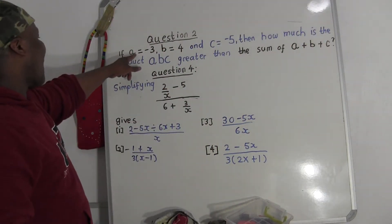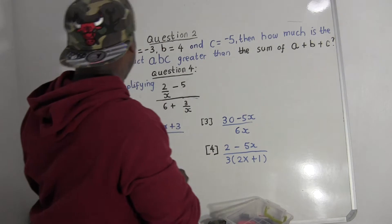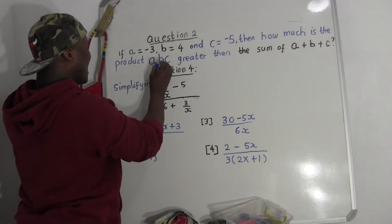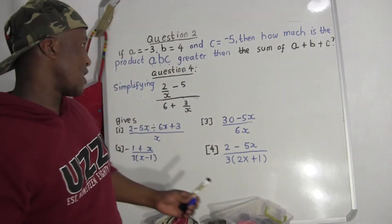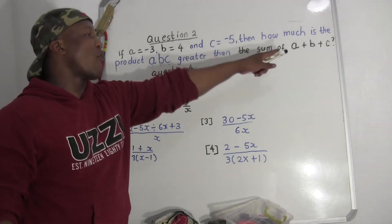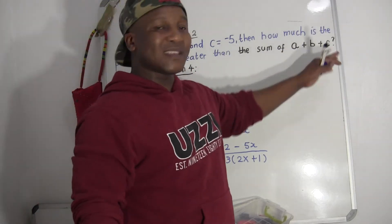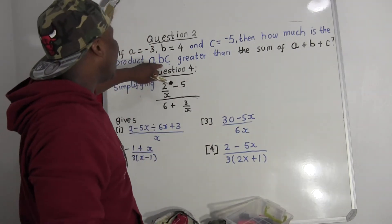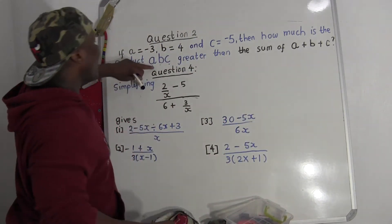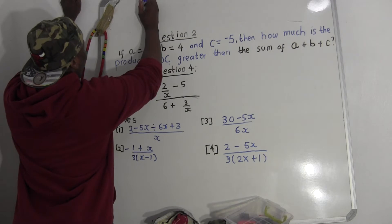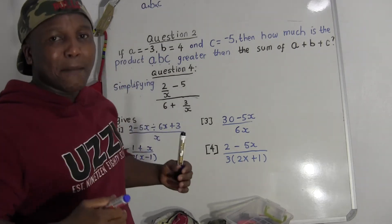The second question: the value of A equals negative three, value of B equals four, value of C equals negative five. How much is the product of A, B, C greater than the sum of A, B, and C? Product means take something and multiply it with another thing. So we take A times B times C and compare it to A plus B plus C.